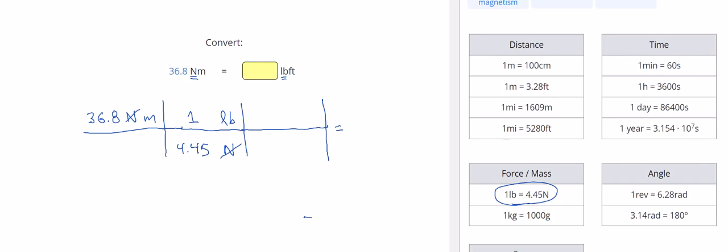And then we need to go from meters to feet. Meters was on the top so meters needs to be on the bottom and feet will then be on the top. Looking at my conversion, one meter equals 3.28 feet.